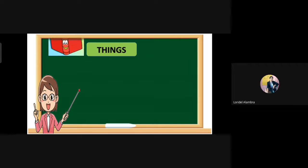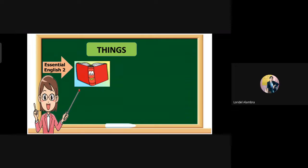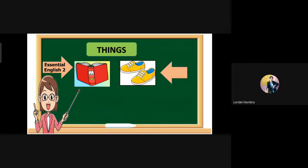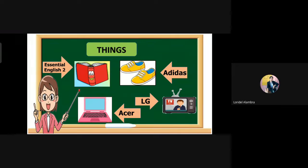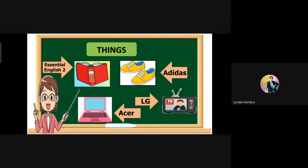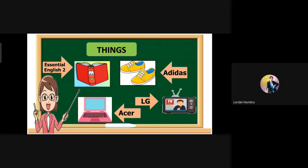Another example in things: the name of this book is Essential English 2. Essential English 2 is the specific name of this book. The brand of this laptop is Acer. The brand of these shoes is Adidas. The specific name of this television is LG. So Essential English 2, Acer, Adidas, and LG are examples of proper nouns.